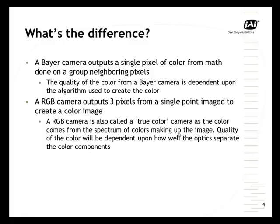Because on a Bayer camera you get color from mathematics, the quality of the color will be dependent upon the algorithm used. A red, green, blue camera outputs three pixels from a single imaged point. It's also known as a true color camera, as it derives colors directly from the color spectrum. Quality of the color will be dependent upon how well the optics — the prism block — separate the component colors. Note that in a Bayer camera, different types of algorithms are used, and therefore quality will trade off against speed.